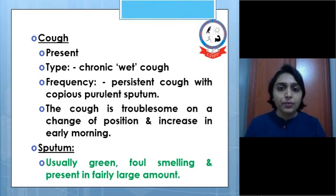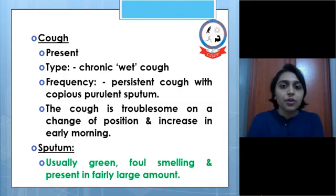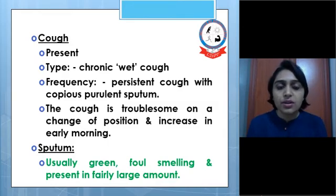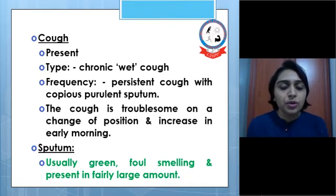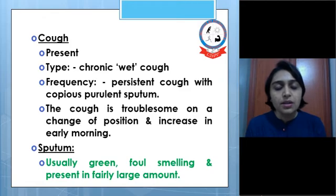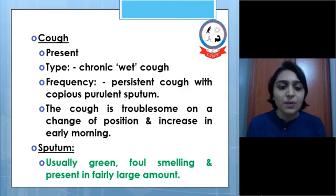Sputum characteristics are something different from other conditions, making it an important differential diagnosis feature. Sputum in bronchiectasis is usually green, foul-smelling, and present in fairly large amounts.